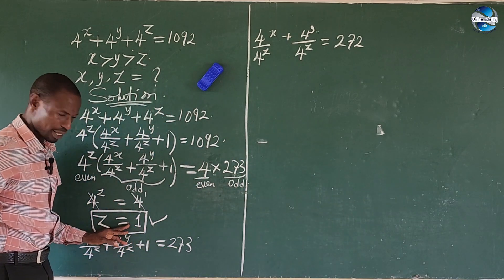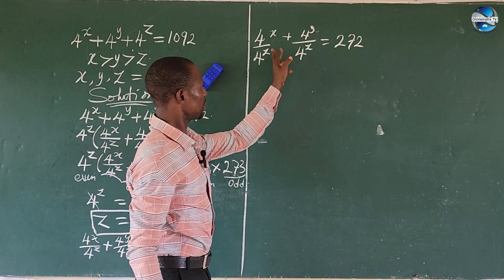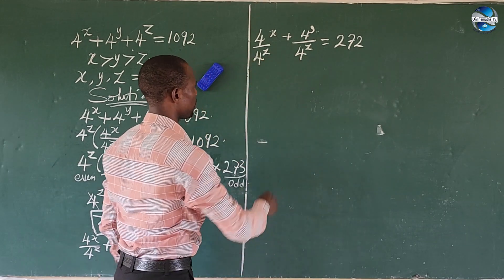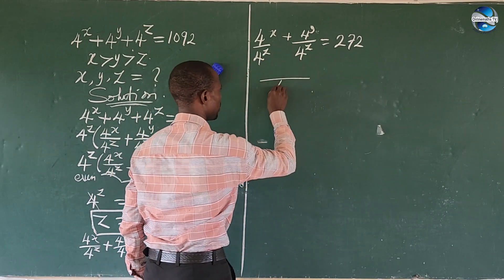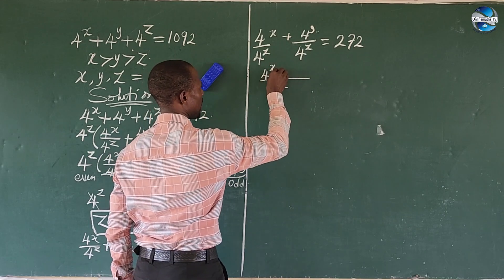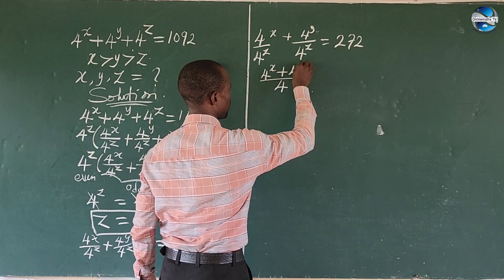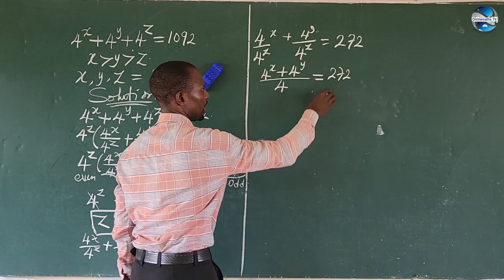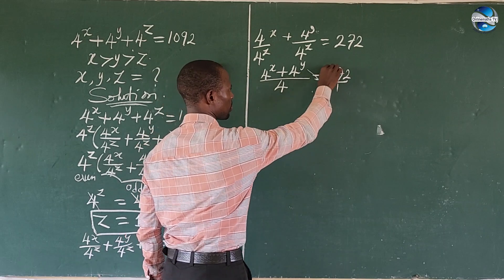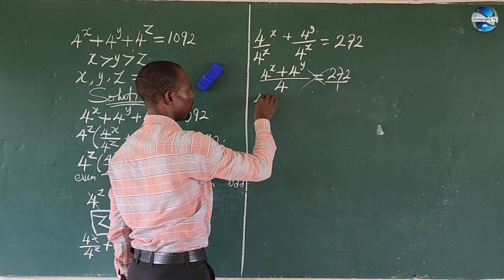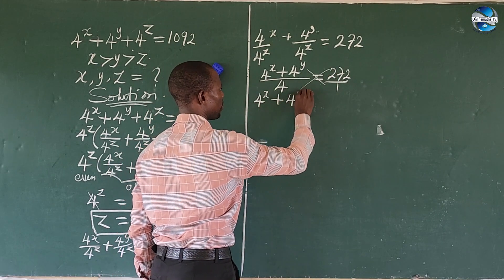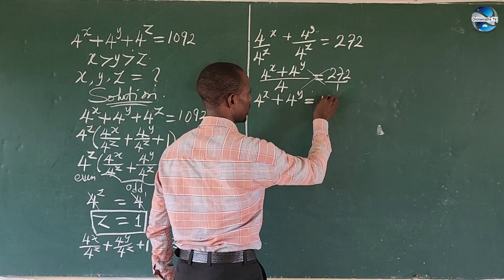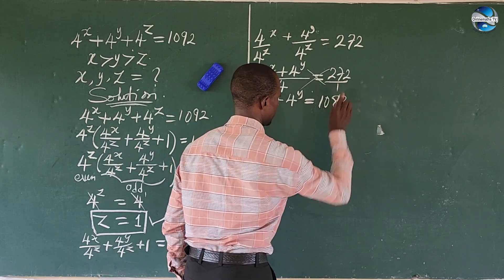Now we calculated z to be 1. So if we put in 1, 4 to the power of z gives us 4. Finding the LCM of both sides gives us 4. So we have 4 to the power of x plus 4 to the power of y, all over 4, equals 272. Cross multiplying gives us 4 to the power of x plus 4 to the power of y equals 1088.